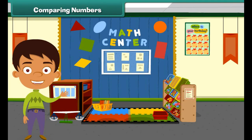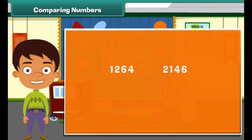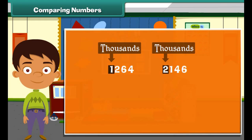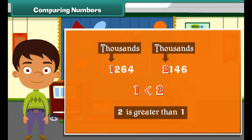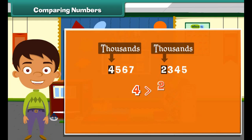Let us now learn to compare numbers. To compare two four-digit numbers, we first compare the digits at the thousands place. The number that has a greater digit at the thousands place is the larger of the two. For example, comparing 4567 and 2345: since 4 is greater than 2, we can say that 4567 is larger.